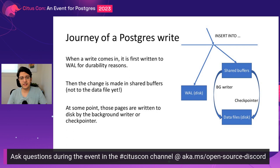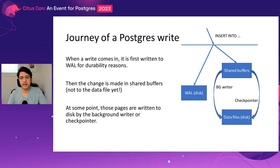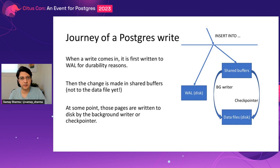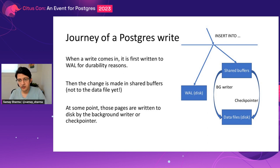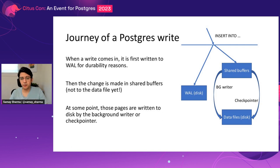When you make a write, it's first written to the WAL — Postgres's write-ahead log — for durability reasons, so that if the database crashes you can replay the writes and get back to the current state. Then you make a write into shared buffers, which is Postgres's buffer pool, and then you acknowledge the write to the user. Writing to disk is done by two background processes: the background writer and the checkpointer, which write out the contents of shared buffers to disk based on different criteria.